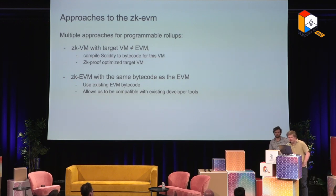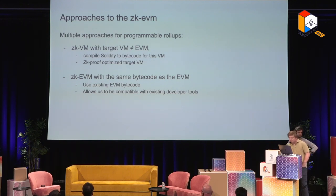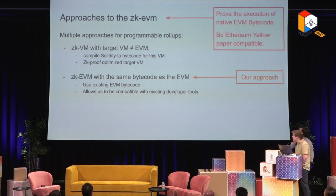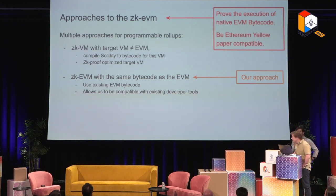There are basically two main ways of doing a ZK EVM. The first approach is to take Solidity and compile it to a virtual machine optimized for zero-knowledge proving purposes — that is not the approach we took. We wanted to be fully compatible with EVM bytecode as it exists today, so we set out to prove the execution of native EVM bytecode in a zero-knowledge proving scheme and be fully compatible with the Ethereum yellow paper. One advantage is that it allows us to reuse existing developer tools.